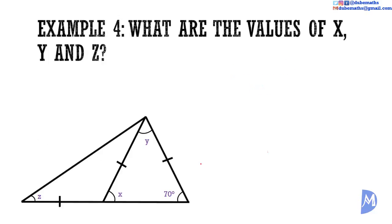Example 4: What are the values of X, Y, and Z? For clarity, let us name the vertices A, B, C, and D. The angles opposite the equal sides in a triangle are equal. In triangle ABC, these two sides are equal. Thus, angle X and angle ABC are equal, so X is equal to 70 degrees.